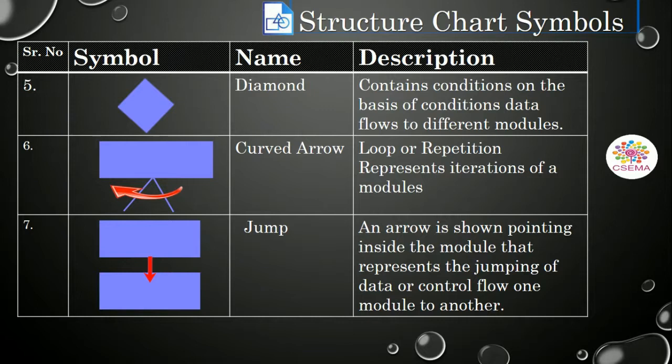And the next symbol is a jump. An arrow is shown pointing inside the module that represents the jumping of data or the control flow from one module to another. And these seven are the important building blocks of the structure chart.